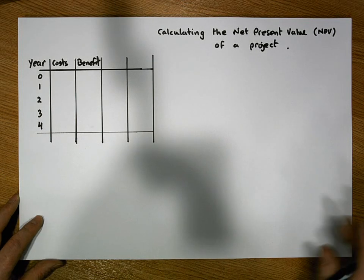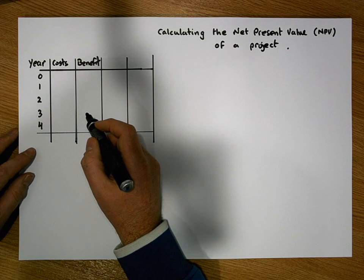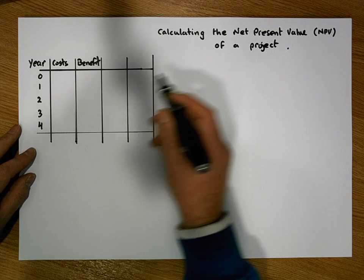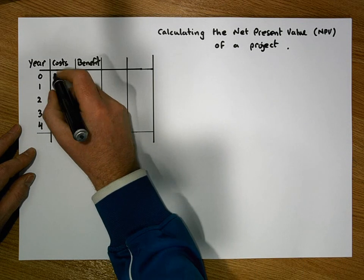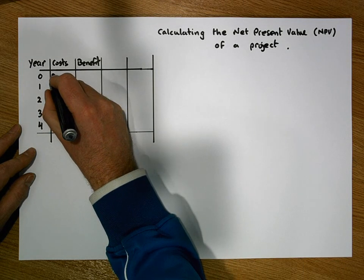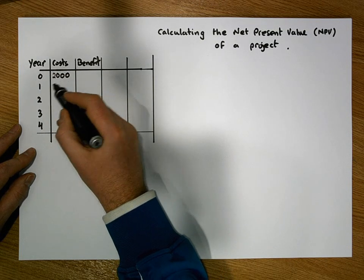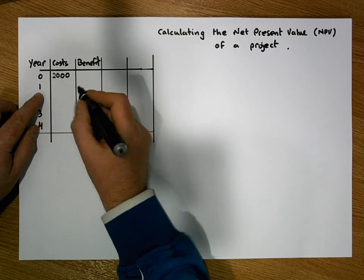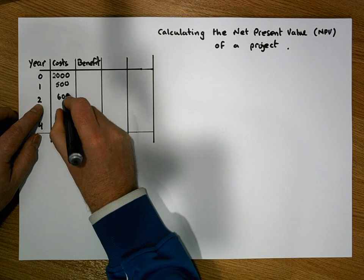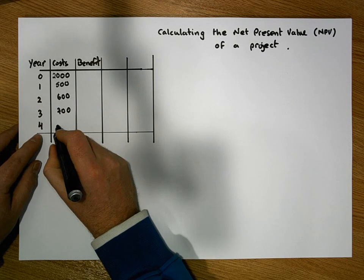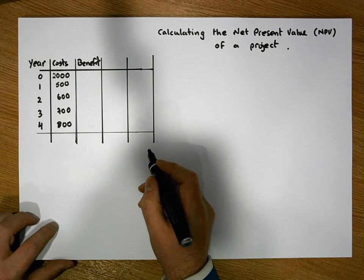As an example, let's generate a number of costs for a particular project. In year zero — today — there's an initial setup cost of 2,000 euros. After one year has elapsed, estimated costs are 500 euros; then 600 euros, 700 euros, and 800 euros in years two, three, and four respectively.